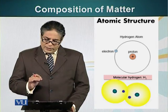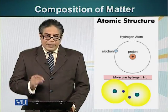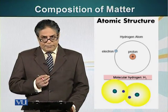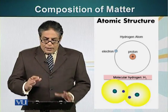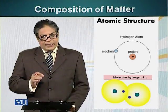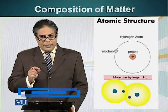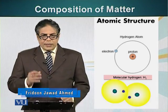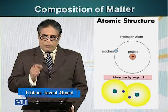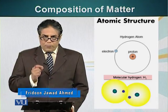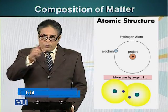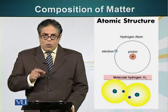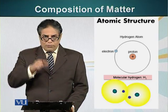We will look at the simplest case scenario of an atom, which is a hydrogen atom. The hydrogen atom has a single positively charged particle at the center which is called the nucleus. This positively charged particle is called the proton. Around this proton, a negatively charged particle called electron revolves.